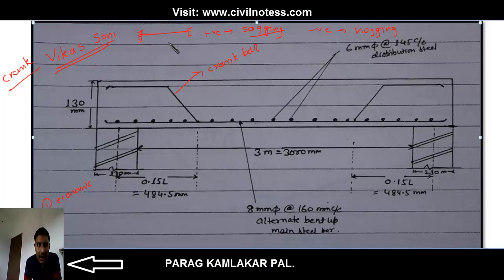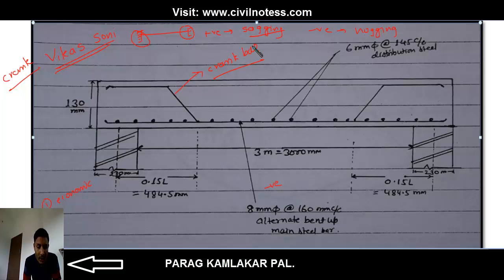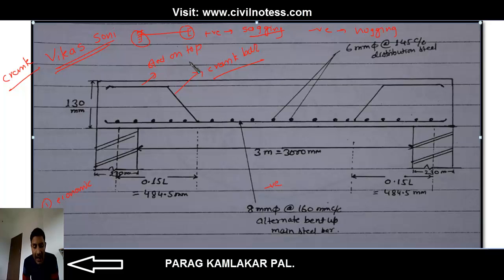The bottom steel is required at the mid-span and the top steel resists the negative moment at the support. The negative moment supports are required at mid-span. So the bent up bar, or crank bar, is provided to take the steel on top at the support side. Only nominal steel is sufficient at the support, and the crank bar is provided to take the steel at the support side at a distance of 0.5.